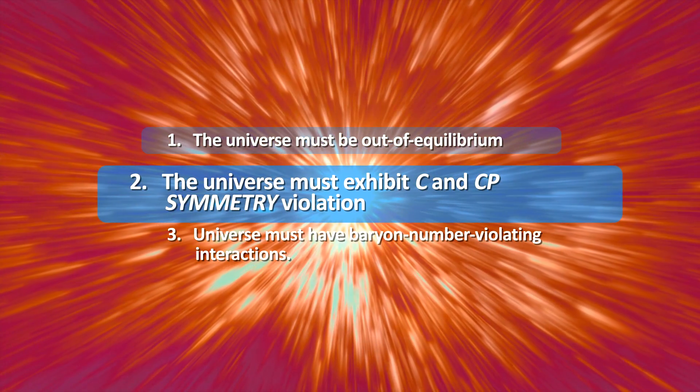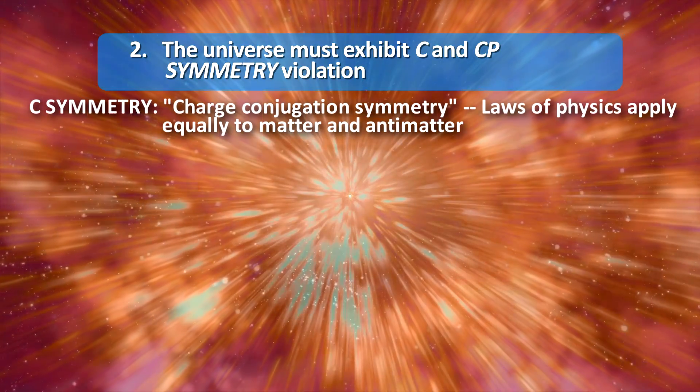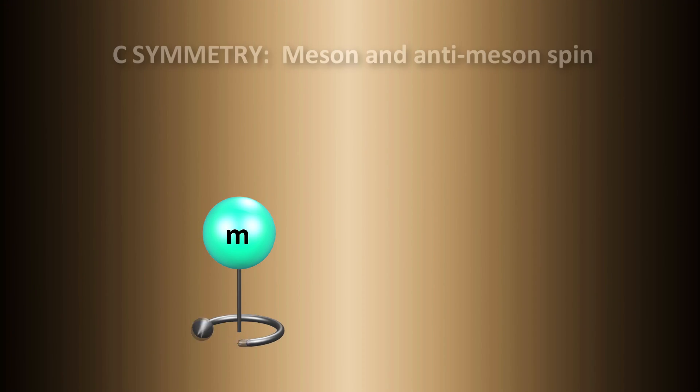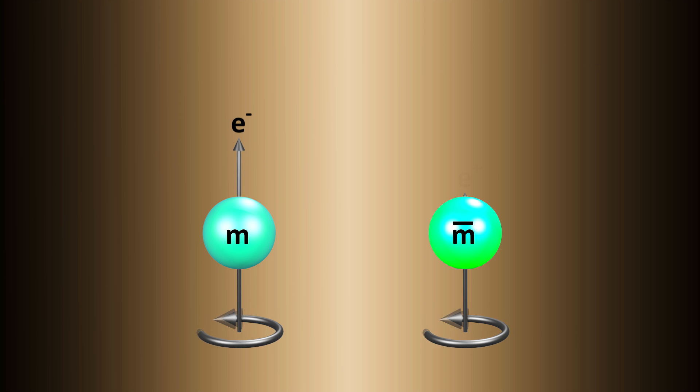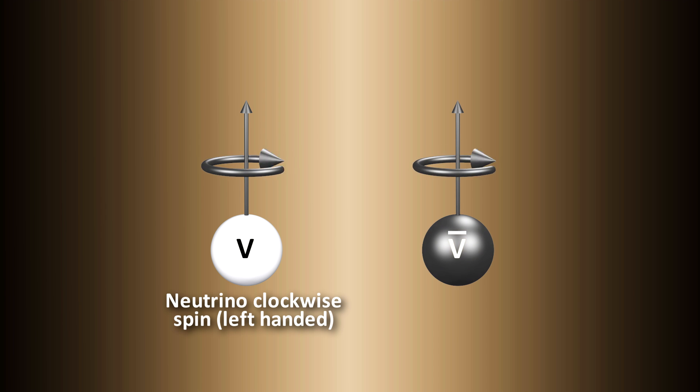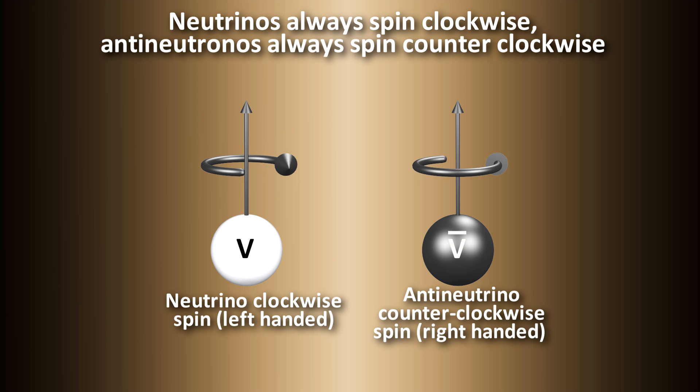C symmetry stands for charge conjugation symmetry. It just means that the laws of physics should apply just as equally to antimatter as they do to matter. If you have a particle spinning clockwise, the antiparticle should also be spinning clockwise. If you have a particle decay in a certain way, the antiparticle should also decay in the same way. But if C symmetry is violated, particle and antiparticles can behave opposite to one another. It turns out that the weak force breaks C symmetry all the time. This is because neutrinos only have one type of spin. If you take a neutrino that is spinning clockwise, and try to apply the C transformation to make it an antineutrino, it doesn't work. This is because neutrinos always spin clockwise and antineutrinos always spin counterclockwise.